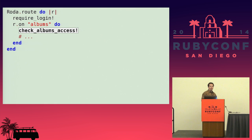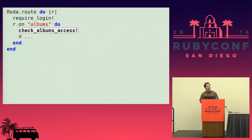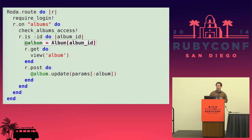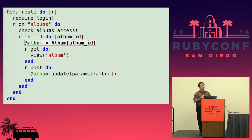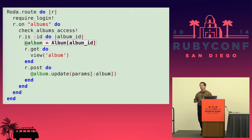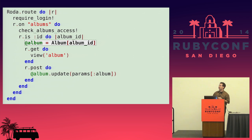This principle applies at all points in the routing tree. If only certain users should have access to view or update albums, you can have that check near the top of the R.on albums block. The most common use is when dealing with separate request methods for the same request path — the GET and POST routes can share code for retrieving the album. In Rails or Sinatra, before filters are separated from the code being executed, which makes it harder to reason about, and specifying a before filter for every set of GET and POST routes is cumbersome and negatively affects Sinatra's performance.